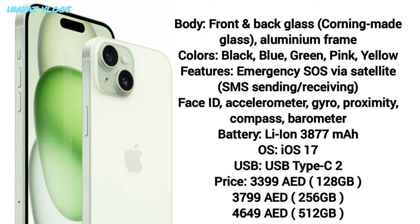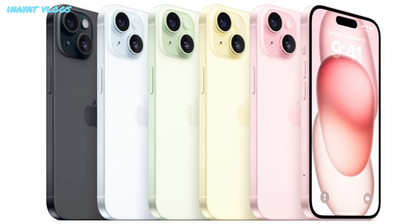The iPhone 15 comes in five colors: Black, Blue, Green, Pink, and Yellow. Features include emergency SMS sending and receiving via satellite, Face ID, accelerometer, gyro, proximity, compass, and barometer. The battery capacity is 3877 mAh. It runs iOS 17 and comes with USB Type-C 2. Pricing in Dubai: 128GB is 3399 dirham, 256GB is 3799 dirham, and 512GB is 4649 dirham. Convert UAE dirham to your currency at www.xe.com.